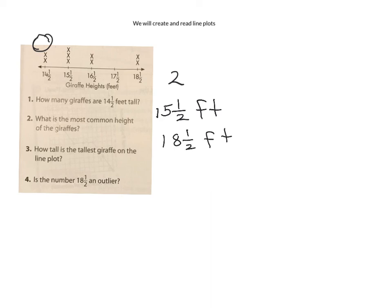And is the number 18 and a half an outlier? I would say so because it's away from the rest of the data.